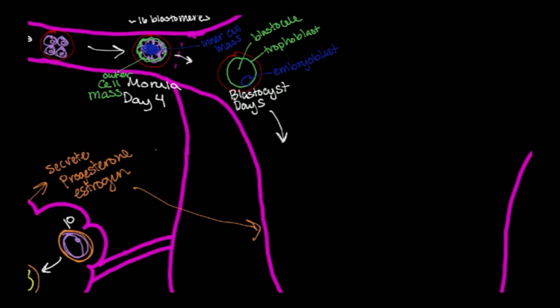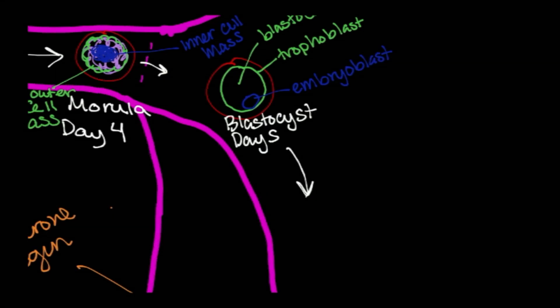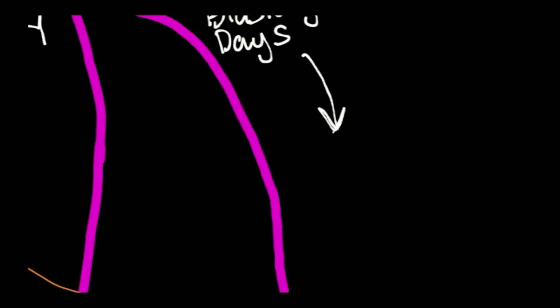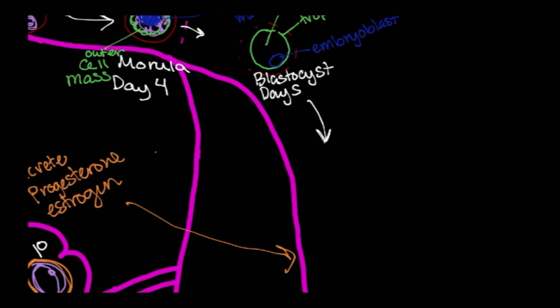Now in order to prepare for implantation, the zona pellucida must break down. The zona pellucida prevents implantation of the embryo. So around day five, day six, the zona pellucida begins to break down. And this process is what allows for implantation of the blastocyst onto the inner lining or the endometrium of the uterus. So this is about day six.